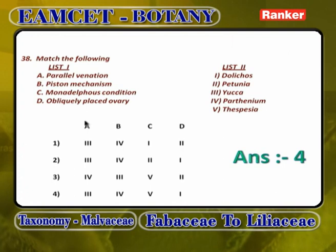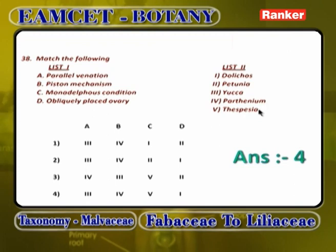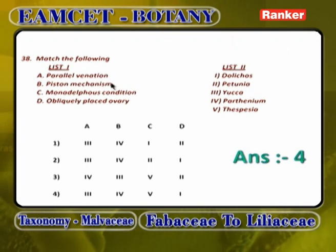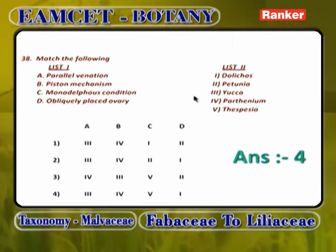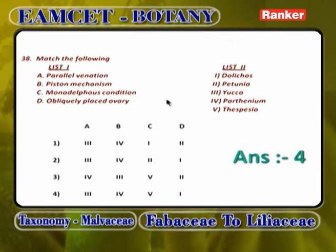A matching question: parallel venation — Yucca; piston mechanism — Dolichos; Monadelphous stamens — Thespesia; obliquely placed ovary — Petunia. Answer is 4.